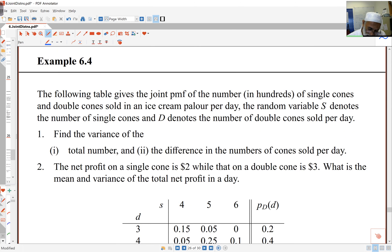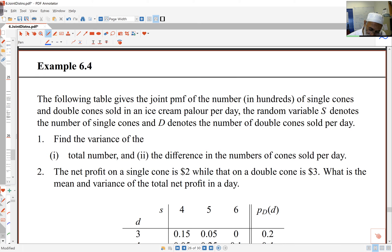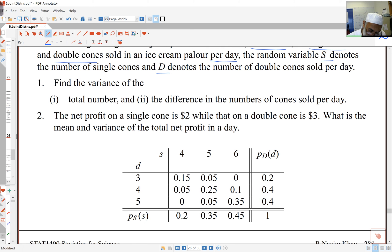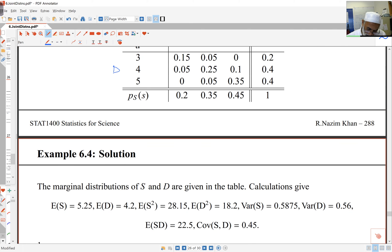Here's an example we'll work through. The table gives us the joint probability mass function of the number in hundreds of single cones and double cones of ice cream sold per day. S denotes the single cones, and D denotes the double cones sold per day. Find the variance of the total number and the difference in the number of cones sold per day. The net profit for single cones is $2, and for double is $3. What's the mean variance of the total net profit? Here are the values for single cones and double cones. The probability mass function is given for us.